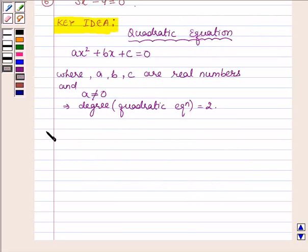Let us now start with the solution. The given equation is 3x squared minus 4 equals 0. Let this be equation number 1.